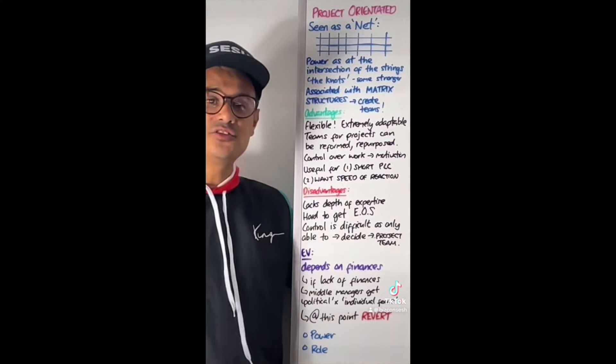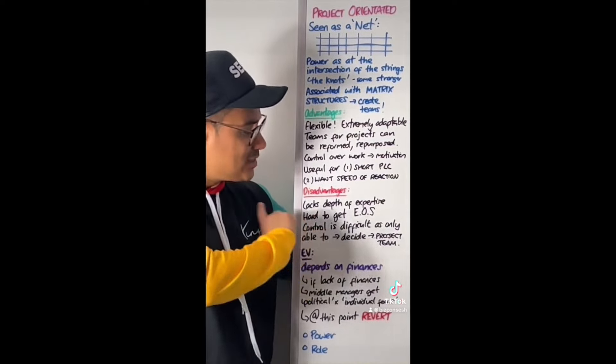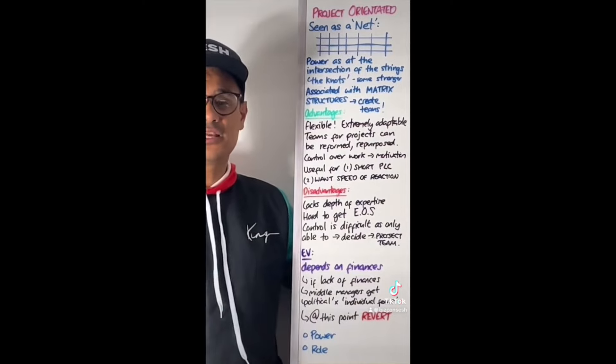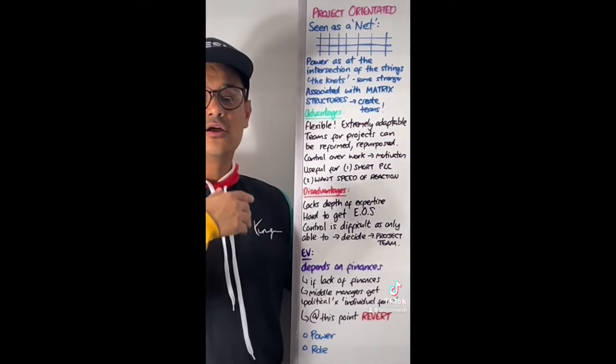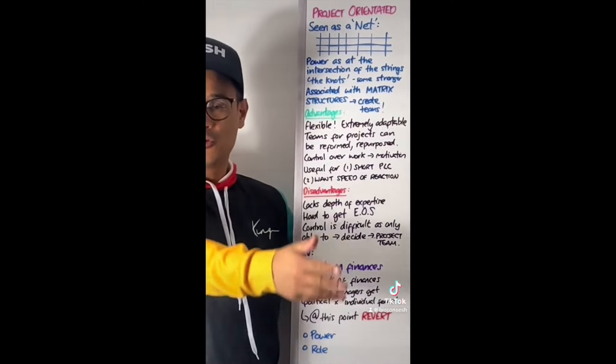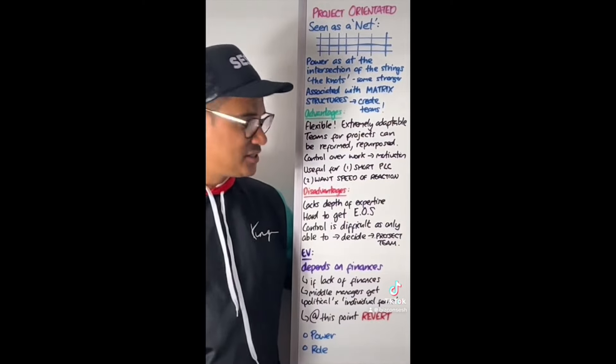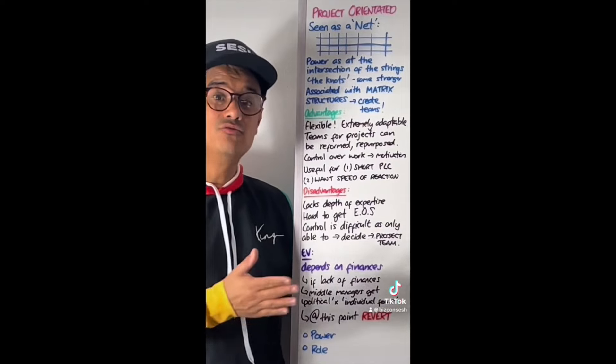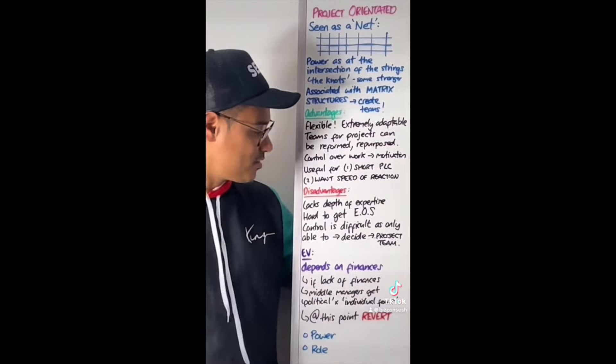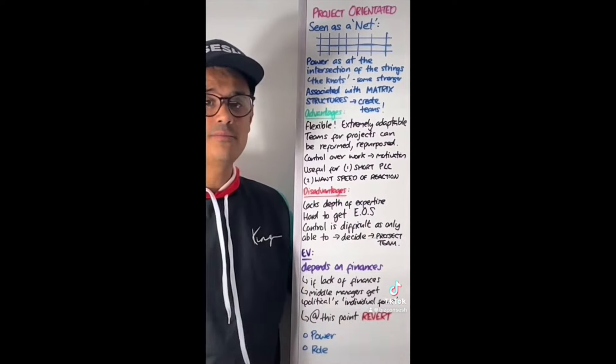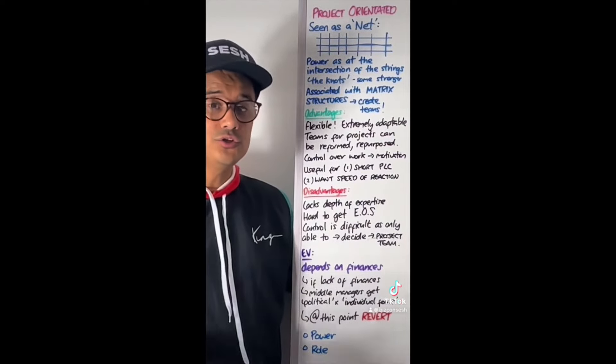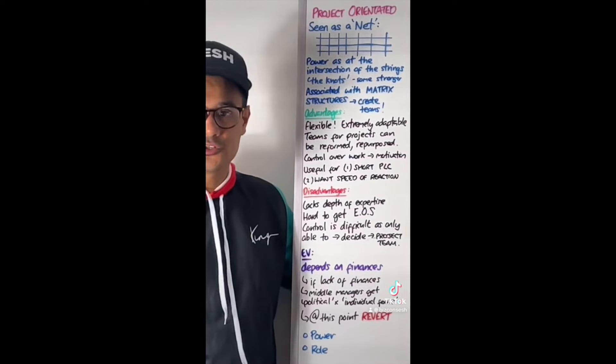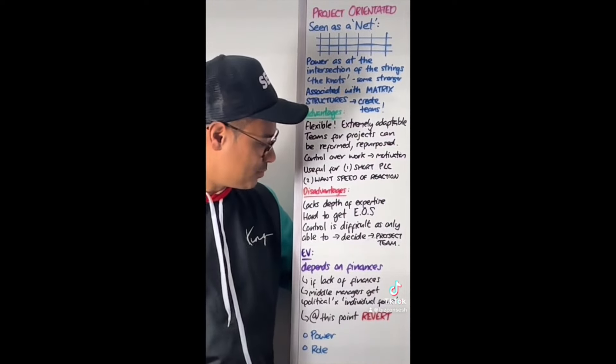The disadvantage of using task culture is that it lacks depth of expertise because these teams are constantly repurposing for different areas. They're abandoned and then have to go on to another project, it's very much consultancy. They might not have that depth of expertise that you might see in role culture in those pillars of the Greek temple. It's hard to get economies of scale because you're constantly chopping and changing what you're doing.